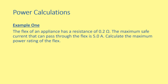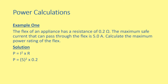Example 1: a flex in an appliance has a resistance of 0.2 ohms. The maximum safe current that the flex can carry is 5 amperes. Calculate the maximum power rating of the flex. For the solution, one mark for writing the equation P equals I squared R, one mark for substituting the values, and we end up with a power of 5 watts.